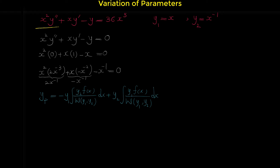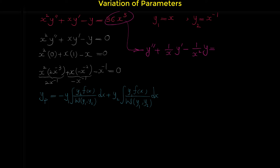To make the coefficient of y double prime equal to 1, we divide both sides of this equation by x squared. Dividing every term by x squared, we get: y double prime plus (x over x squared) y prime minus (1 over x squared) y equals 36x to the 5 over x squared. So: y double prime plus (1 over x) y prime minus (1 over x squared) y equals 36x to the third. Now f(x) equals 36x cubed — not the original right-hand side — because the coefficient of y double prime must be 1.